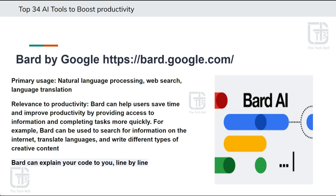Fifth tool is Bard by Google, similar to ChatGPT with enhanced integration like images and visuals. Bard.google.com is an AI language model developed by Google that powers various Google applications and services, bringing the power of AI to users' fingertips. Bard can assist with a wide range of tasks including generating natural language responses, helping with web search queries, and providing language translation. With its deep understanding of context, Bard can engage in more natural and conversational interactions.